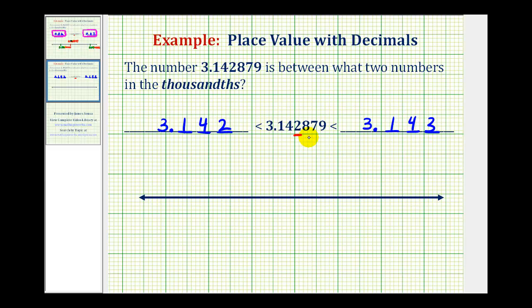So the given number is greater than 3.142 and less than 3.143. To show this, let's plot these numbers on the number line.